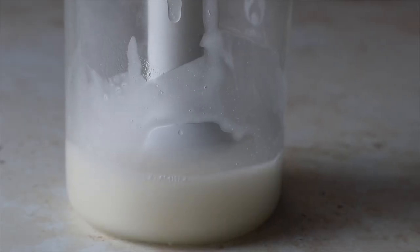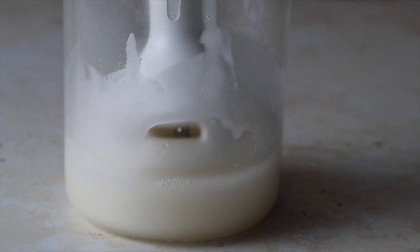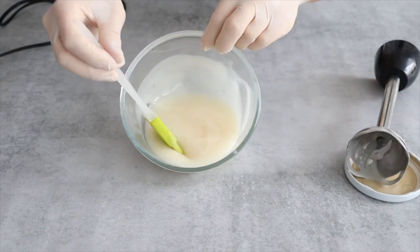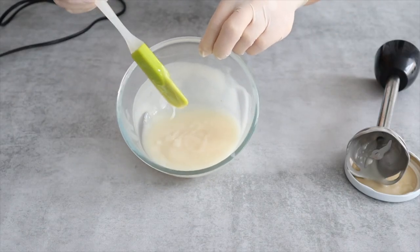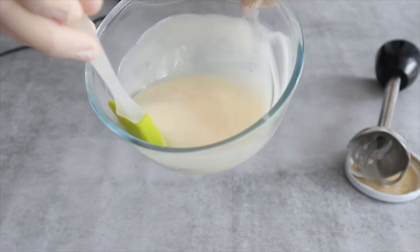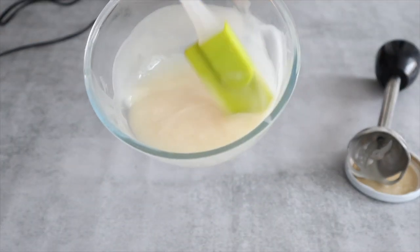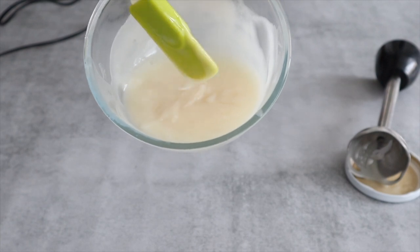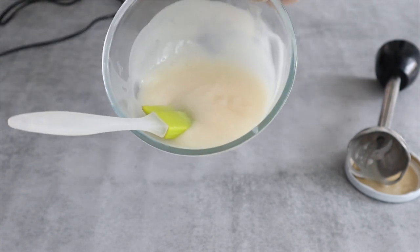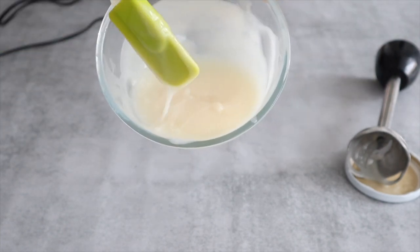What we want to achieve is something called trace. That's when we leave the soap drip on top of the batter and we see a trail left behind. This is what tells us that we are ready to pour the soap into the mold and let it rest for 24 hours before we can unmold it.